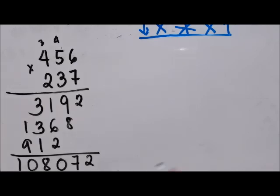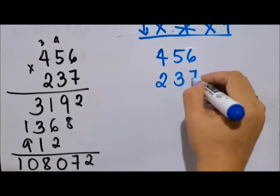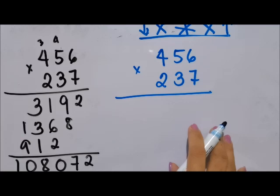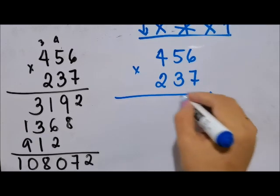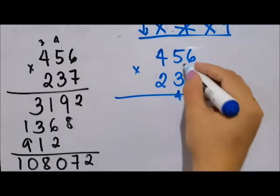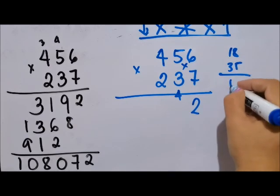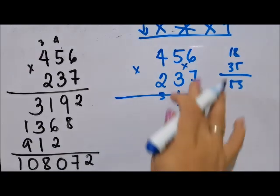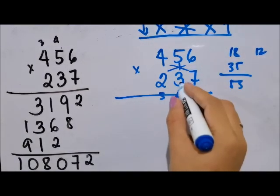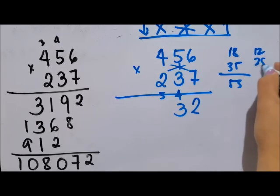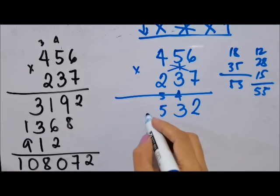Now let's do the triple cross method. 456 times 237. For the first number: 6 times 7 is 42, that's 2, carry 4. Next number: 3 times 6 is 18, 5 times 7 is 35, so this is 53, so 3, carry 5. Next, the triple cross: 6 times 2 is 12, 4 times 7 is 28, 5 times 3 is 15, we add, this is 55, so 5, carry 5.